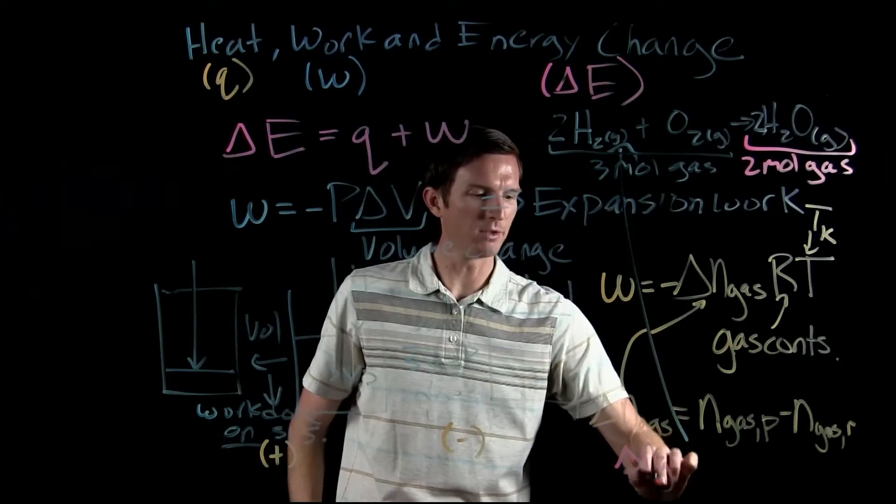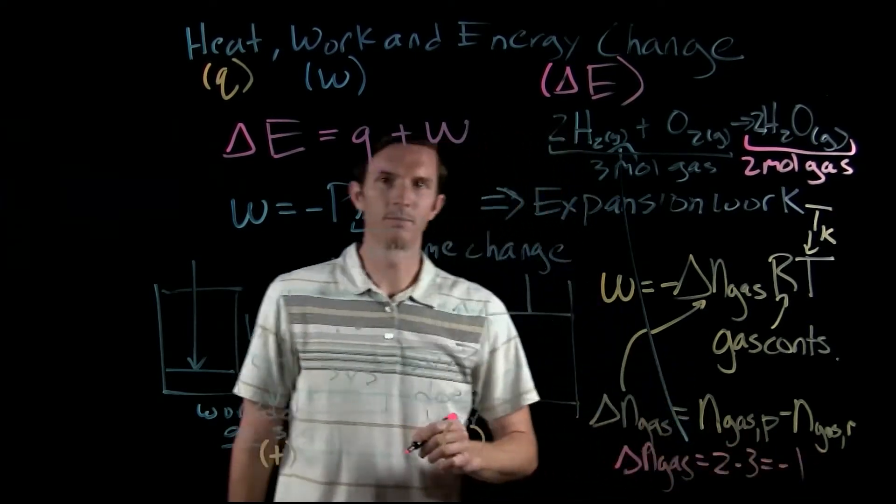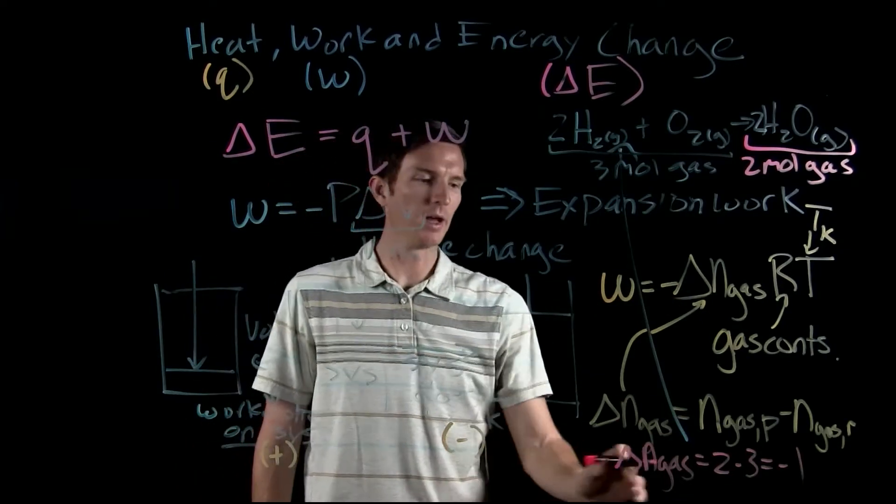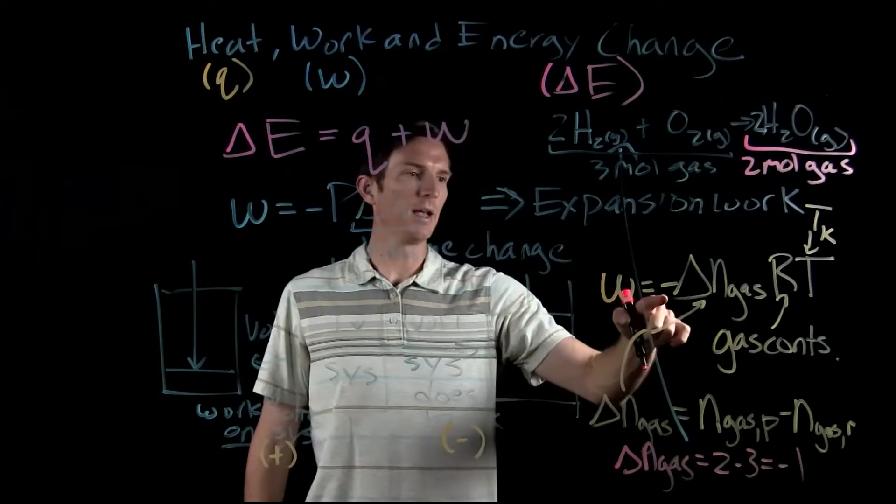The change in the number of moles of gas is going to be two minus three or negative one. And we can go back track and we see, well, that's going to end up with us having a positive work value.